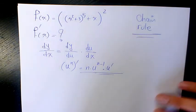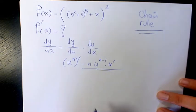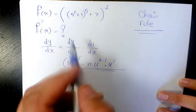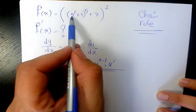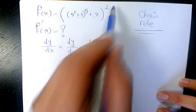That's going to be the answer. So let's go back to the question here. We have (x² + 3)⁵ + x, all squared.